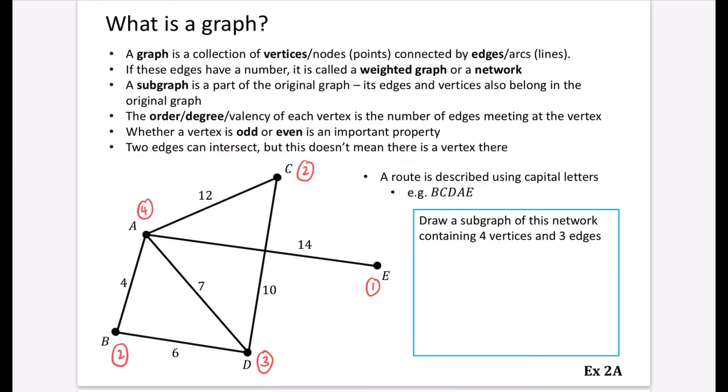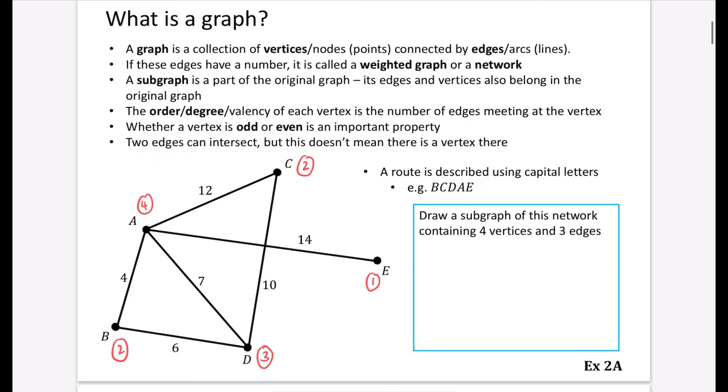And then last of all, two edges can intersect, but this doesn't mean that there is a vertex there. So this point that I'm talking about here, the two edges have intersected, but there is no black dot to represent that there is a town or a station or whatever it is we're modeling there.